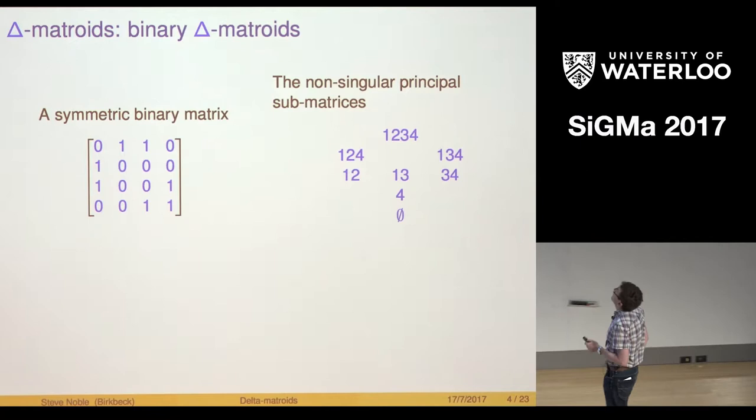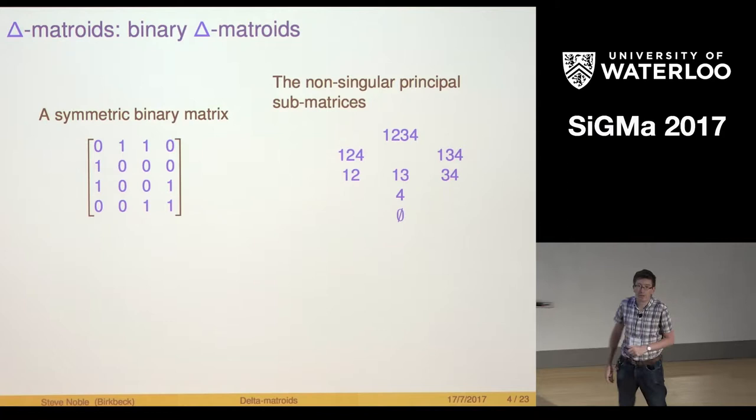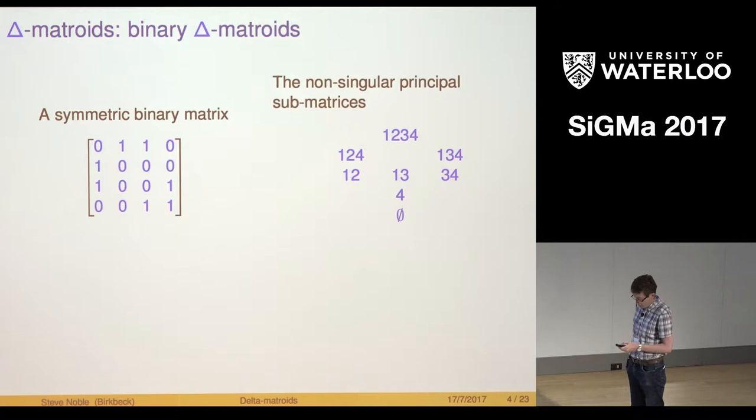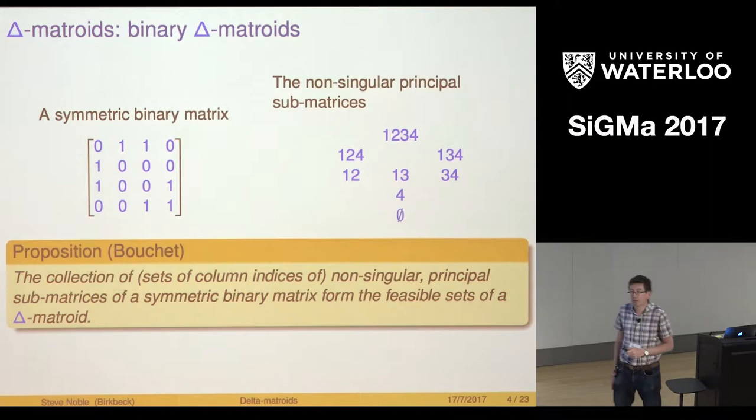For instance 1 2 is a feasible set. If I take the first and second row first and second column I get this sub matrix here and that's non-singular so that's a feasible set. On the other hand if I take 1 2 3 that is singular so that's not a feasible set. That gives me a collection of feasible sets and Boucher proves that gives me a Delta Matroid.